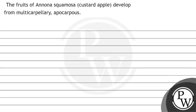Hello guys, let's read the question first. In the question, we have a true-false type statement: the fruits of Annona squamosa, that is custard apple, are developed from a multi-carpellary apocarpous ovary. Here we are basically talking about the ovary — a multi-carpellary ovary in the apocarpous condition — and the fruits of Annona squamosa, that is custard apple.